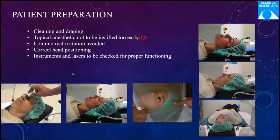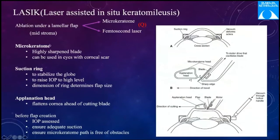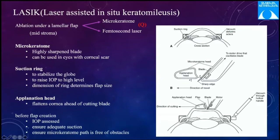LASIK — laser-assisted in situ keratomileusis — is ablation under a lamellar flap performed in the mid-stroma. The flap can be created with a microkeratome or femtosecond laser. The microkeratome is a highly sharpened blade and can be used in eyes with corneal scars, since femtosecond laser requires complete corneal clarity. The suction ring stabilizes the globe, raises the IOP to a high level, and its dimensions determine the flap size. The applanation head applanates the cornea ahead of the cutting blade for a smooth cut. Before flap creation, adequate suction must be confirmed and pseudo-suction ruled out.